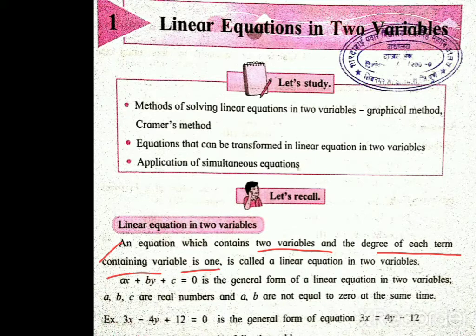Linear equations in two variables manje nakki kaya ahe — thar aasa equation ki jacha madhe two variables manje two unknown terms, jasa ki x and y ithe dhilele ahe, aani tachhi degree hi kiti asaayala pahe jhe thar 1 asaayala pahe jhe.